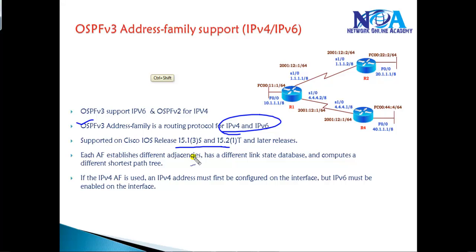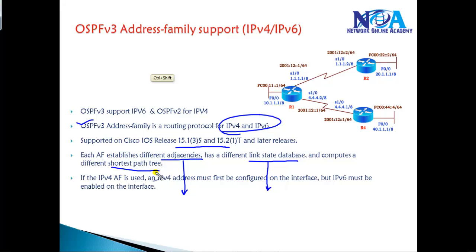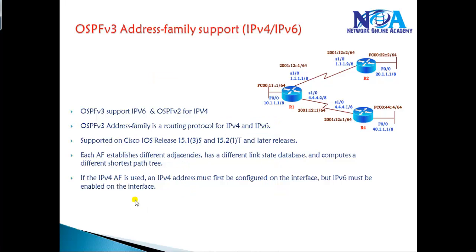Every address family will have different adjacencies — a separate adjacency for IPv4 and IPv6, a separate link-state database for both IPv4 and IPv6, and the shortest path calculation is also completely separate for IPv4 and IPv6.